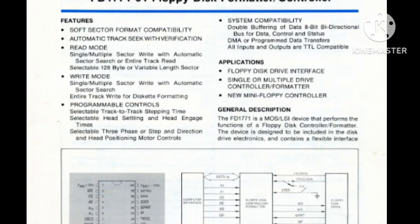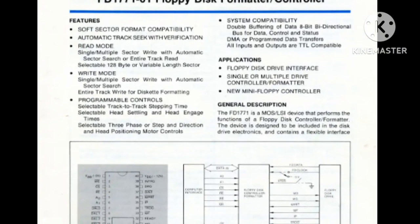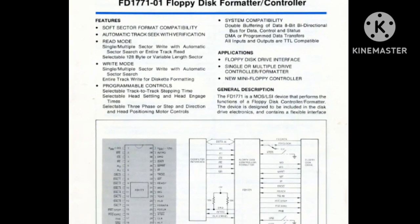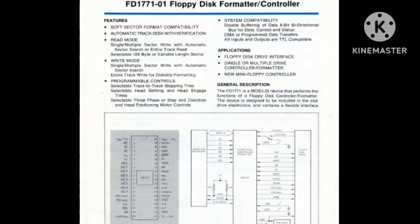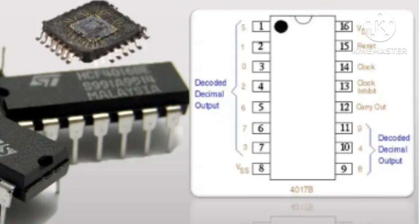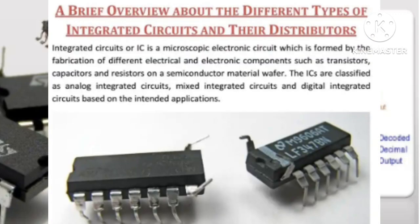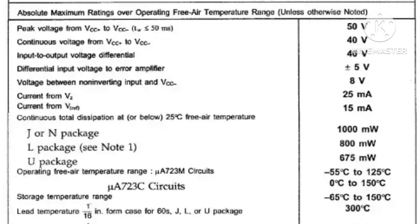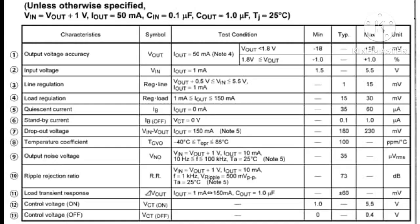A datasheet is a manual of an electronic component or a PCB that describes the complete mechanical specifications — from dimensions, pinout, functionality, block diagrams, operating conditions, supply voltage and temperature ranges, to electrical parameters and performance.